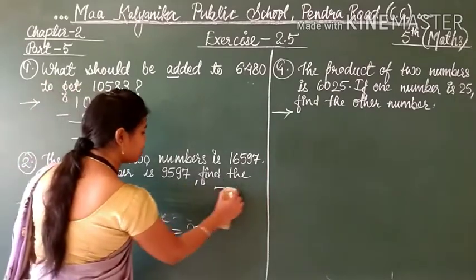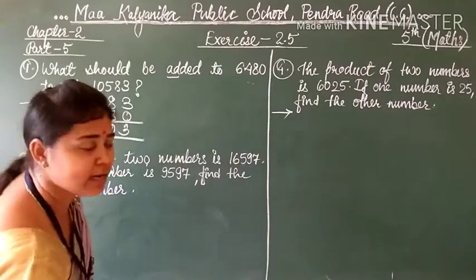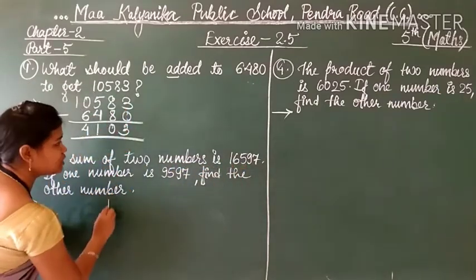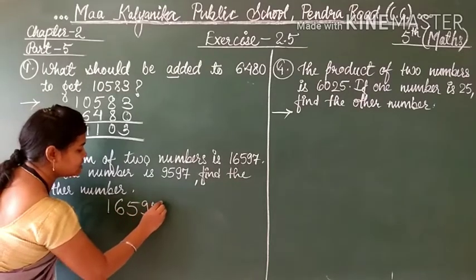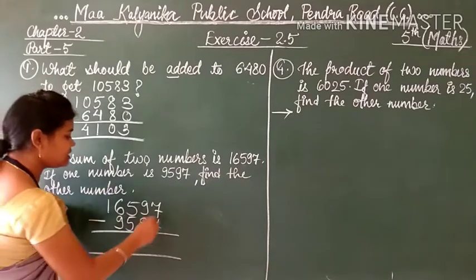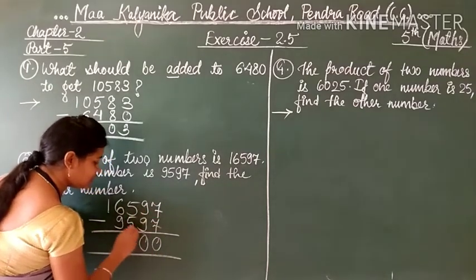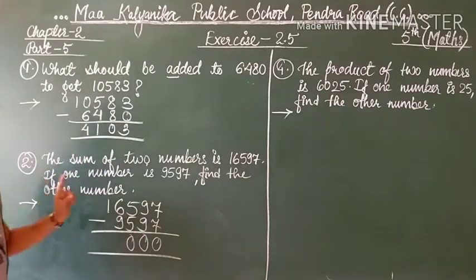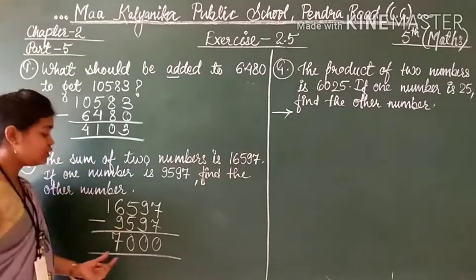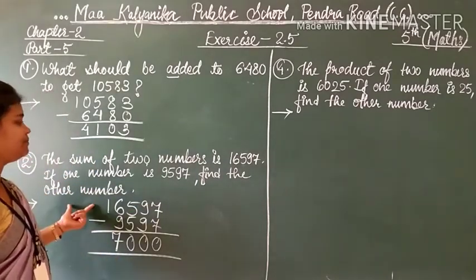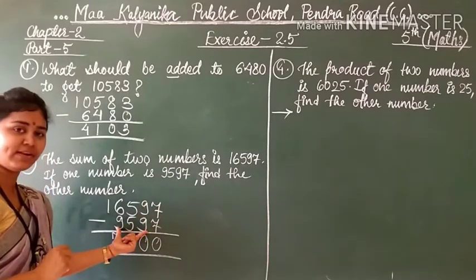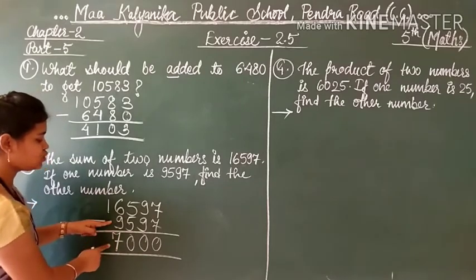So students, in the same way, we write the bigger number first, then subtract the smaller number. The sum of 2 numbers is 16,597 and one number is 9,597. So 16,597 minus 9,597: 7 minus 7 is 0, 9 minus 9 is 0, 5 minus 5 is 0, and 16 minus 9 is 7. So the other number is 7,000.